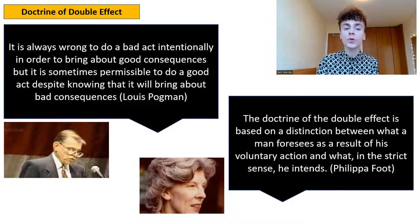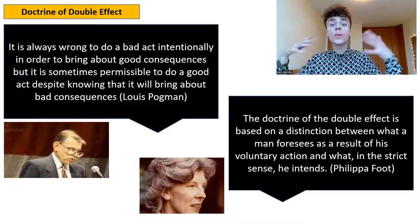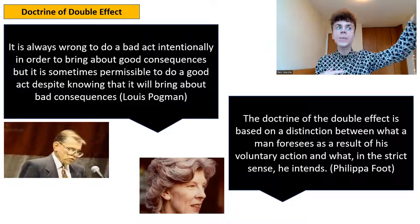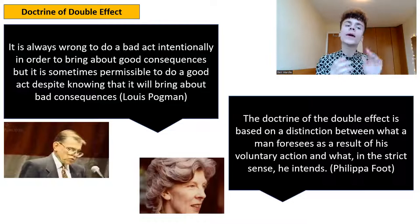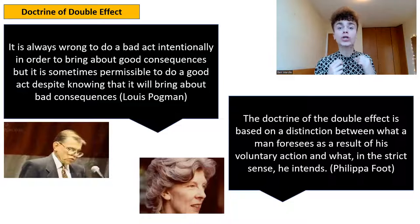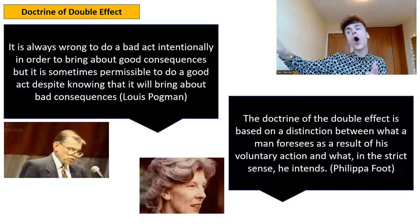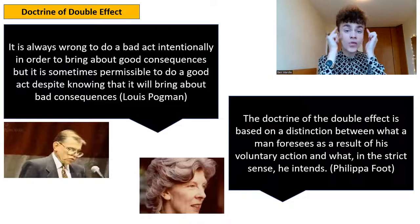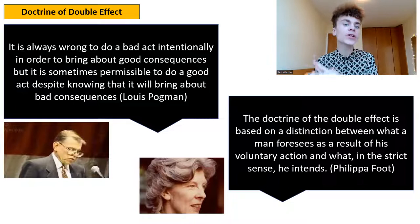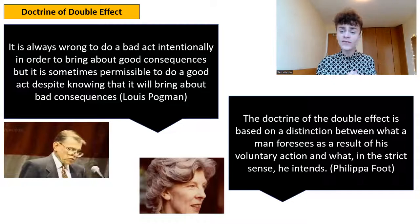Lewis Pojman said: "It is always wrong to do a bad act intentionally in order to bring about some good consequences, but it is sometimes permissible to do a good act despite knowing that it will bring about bad consequences." So with self-defense, you know somebody else may be harmed in the process — you have the foresight to see that — but it's a good act because you're defending yourself and preserving life. On the other hand, you cannot intentionally do a bad act by saying the end justifies the means. Aquinas is very concerned with your intention.